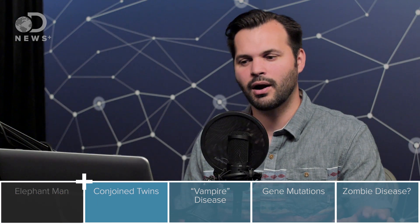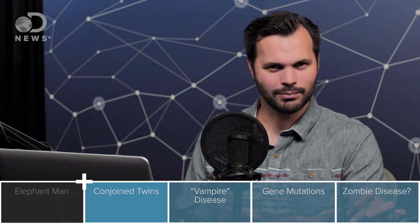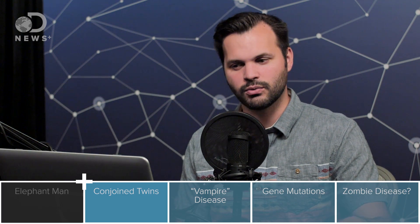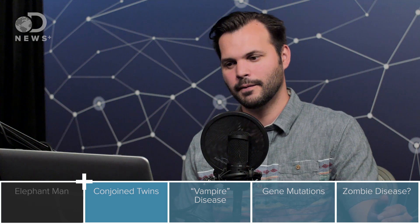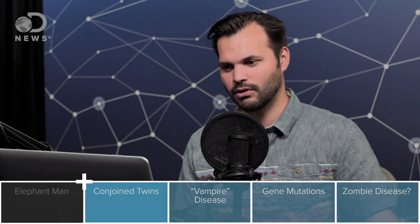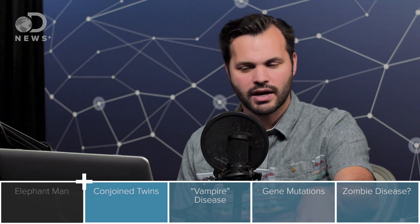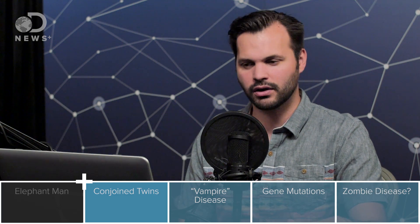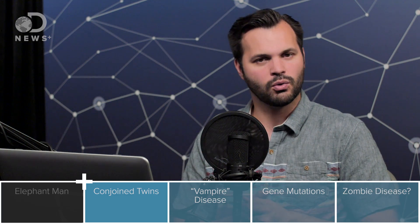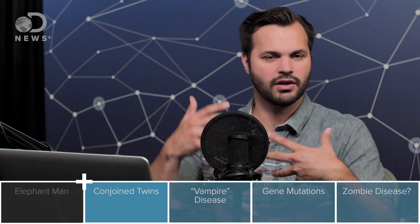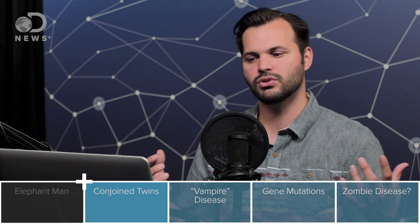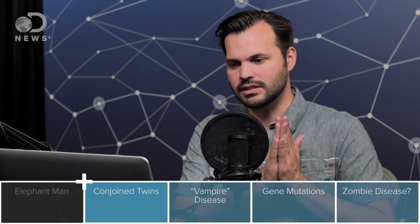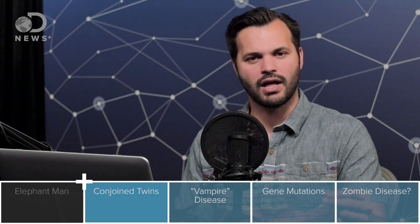The next monsters we're going to talk about are Matt Damon and Greg Kinnear. Maybe you saw the movie Stuck on You where they play conjoined twins — that's just Hollywood, I'm sure you all know. But conjoined twins are actually a real thing. They're genetically identical twins born with their skin and internal organs occasionally fused together. Various internal organs can be fused in a number of different complicated ways.